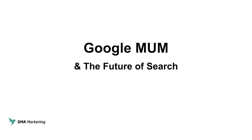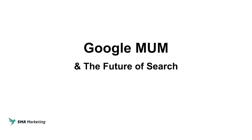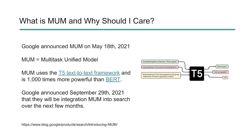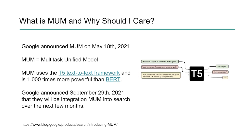This is Google MUM and the future of search. So what is MUM and why should we care? Google announced MUM on May 18th, 2021, and MUM stands for Multitask Unified Model. MUM uses something called T5 — it's a text-to-text framework. It's one of the iterations or improvements to BERT.